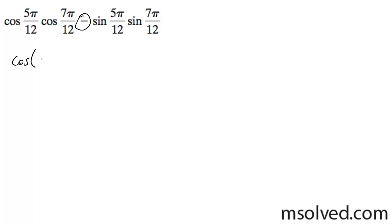In this case we're going to have cosine of alpha plus beta. Here's our alpha, here's our beta. So it's going to be cosine of 5π/12 plus 7π/12.